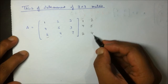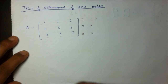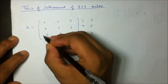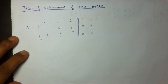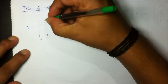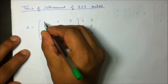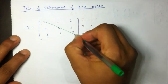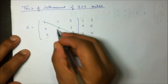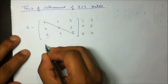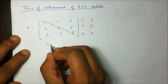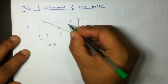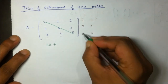Now I am going to multiply the upper diagonals and the lower diagonals. Starting with the first upper diagonal: 1×5×7 = 35. Then I move to the second upper diagonal: 2×3×2 = 12.